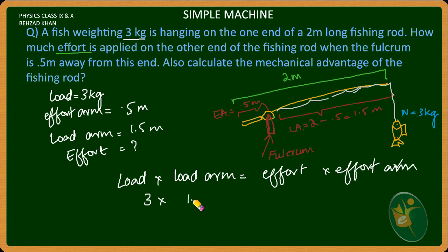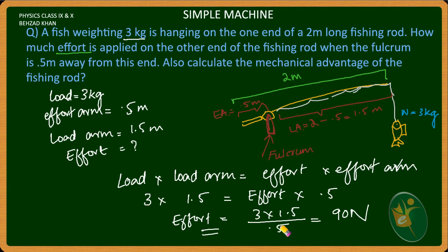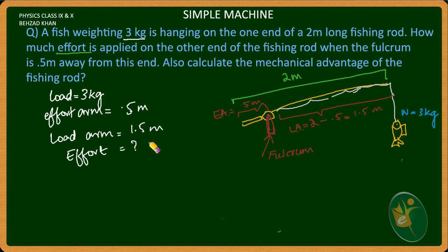Now we apply the lever principle. The load is 3 kg, the load arm is 0.5 meters, the effort arm is 1.5 meters. Solving for effort: effort equals 90 N. So the effort required is 90 N.